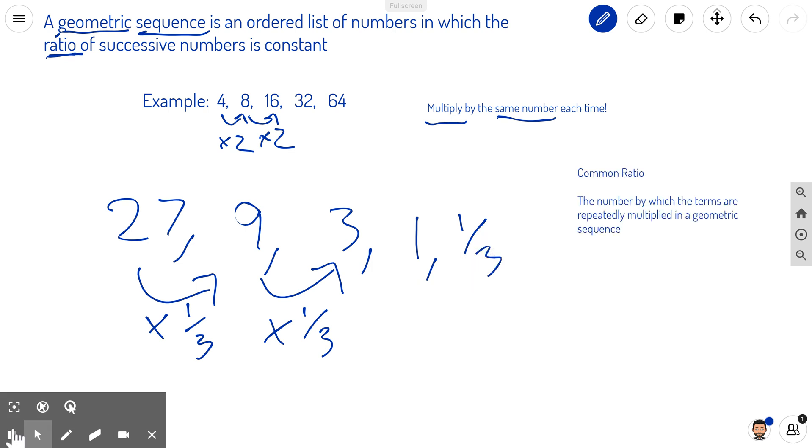That brings us to our second piece of vocabulary. The common ratio is the number which the terms are repeatedly multiplied by. So our common ratio here for our first one was times two. So two would be our common ratio.